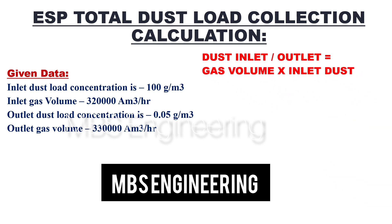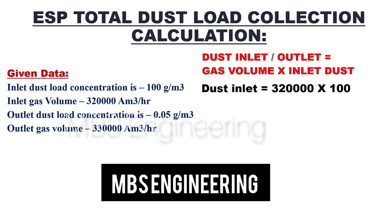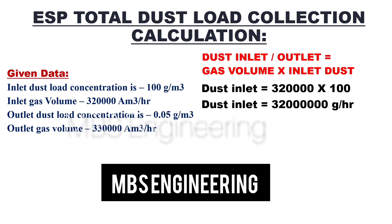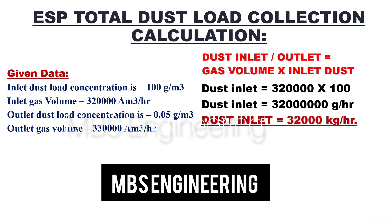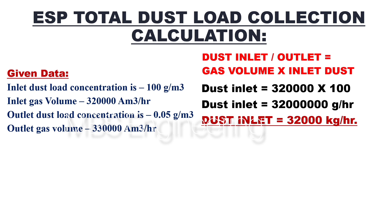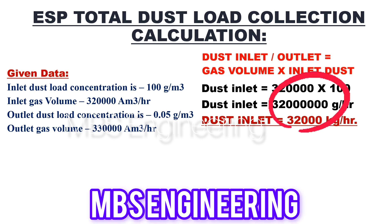Dust load is equal to gas volume multiplied by dust concentration. Gas inlet dust load equals 3,20,000 multiplied by 100, giving a dust inlet concentration of 32,000,000 grams per hour. To convert into kilograms per hour, 32,000,000 is divided by 1,000. The obtained inlet dust concentration value is 32,000 kilograms per hour.